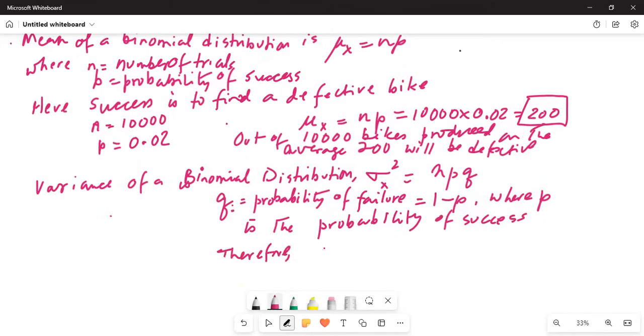Therefore, σ squared is equal to n times p times 1 minus p. In this case, it is 10,000 is n multiplied by p is 0.02 multiplied by 1 minus 0.02.